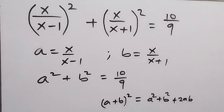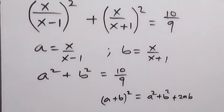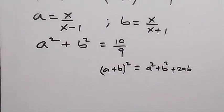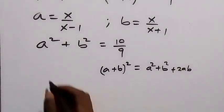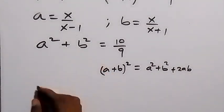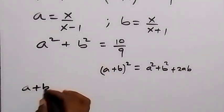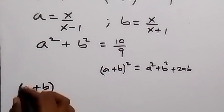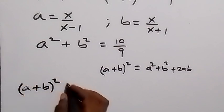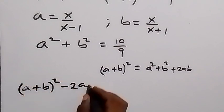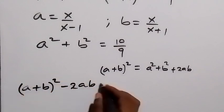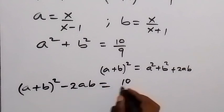That gives us (a+b)² - 2ab = a² + b². So instead of writing a² + b², we can write (a+b)² - 2ab = 10/9.